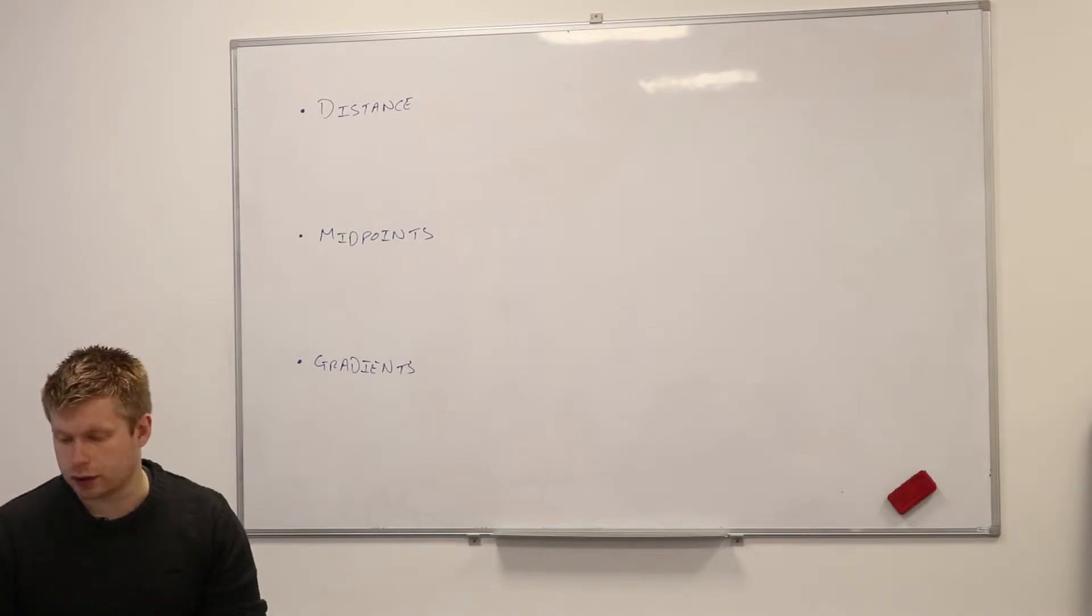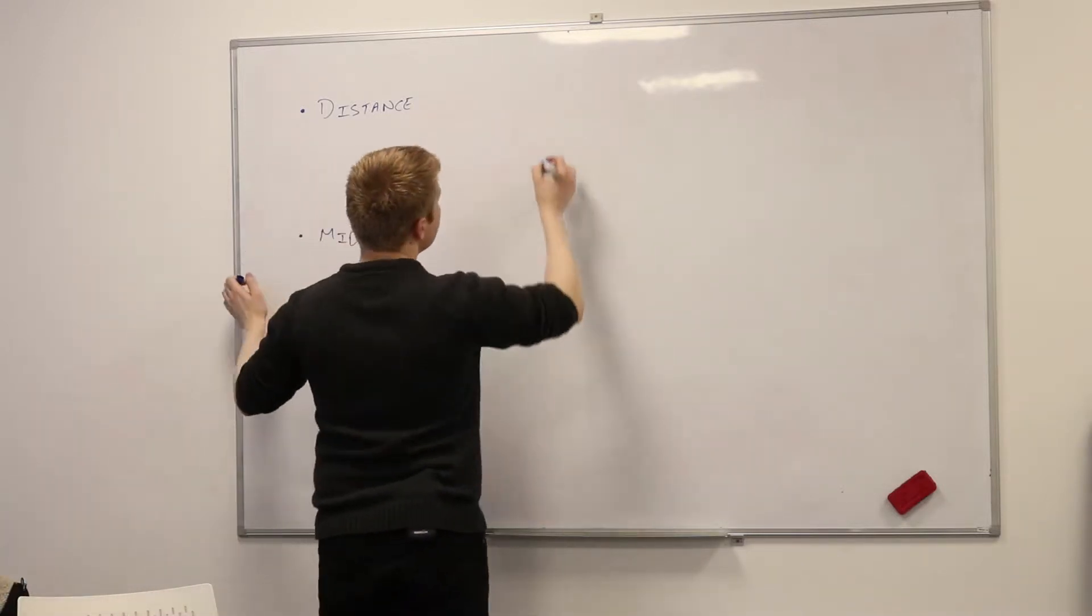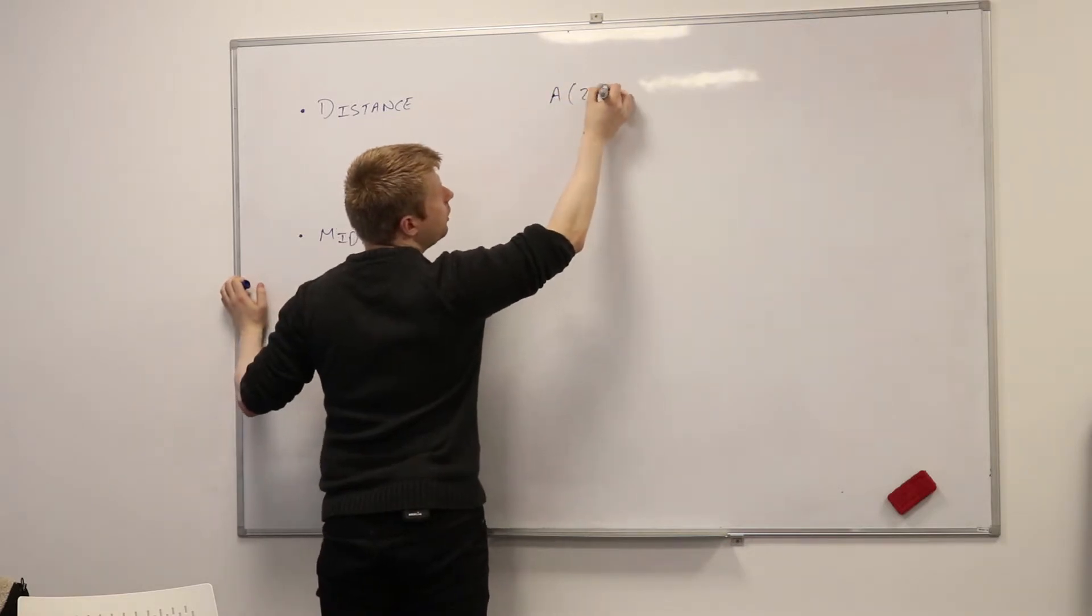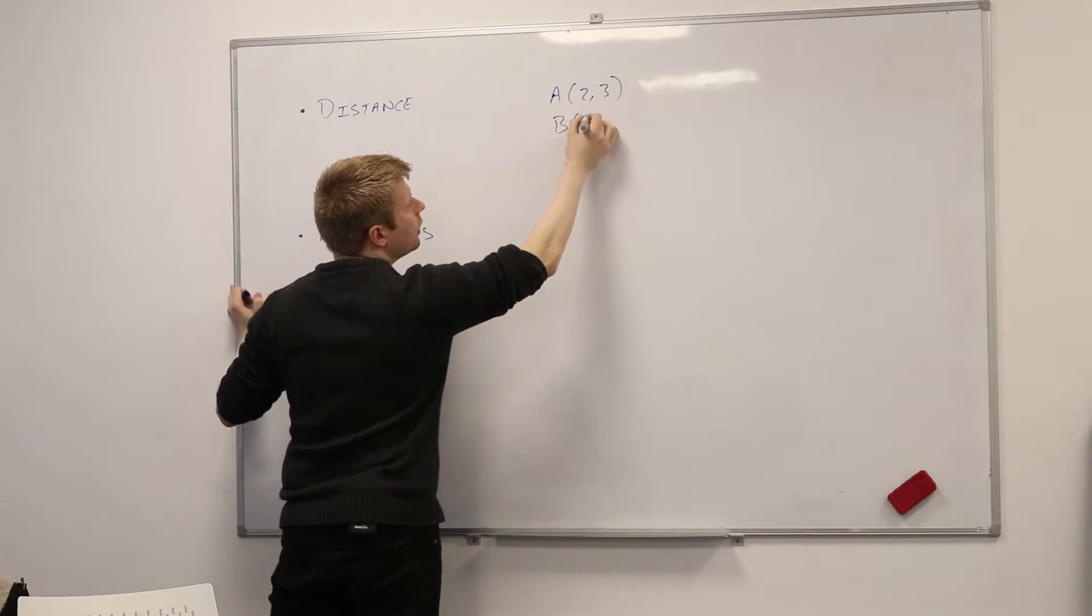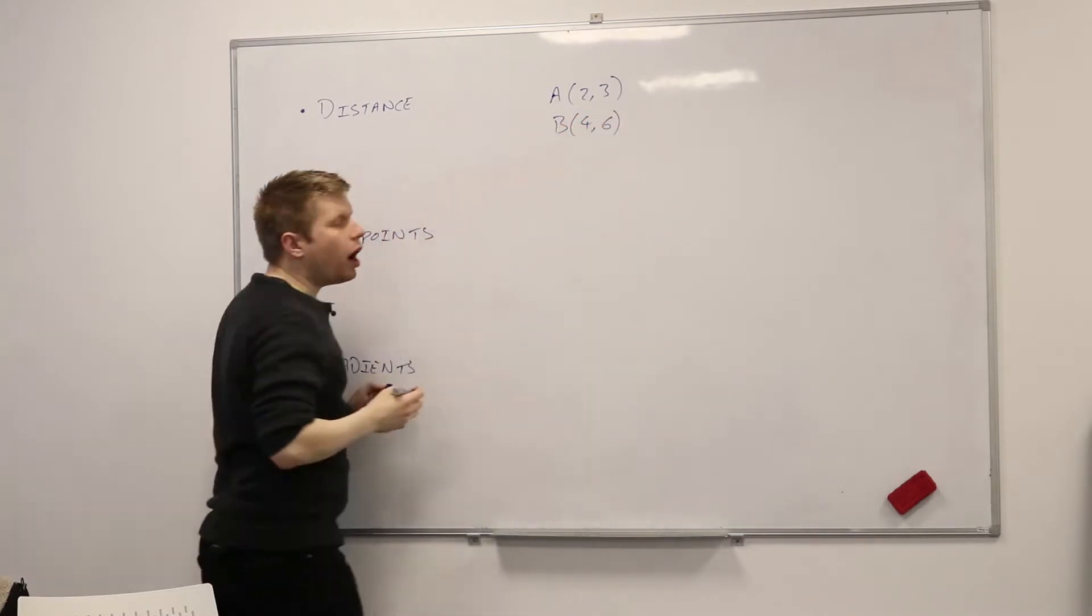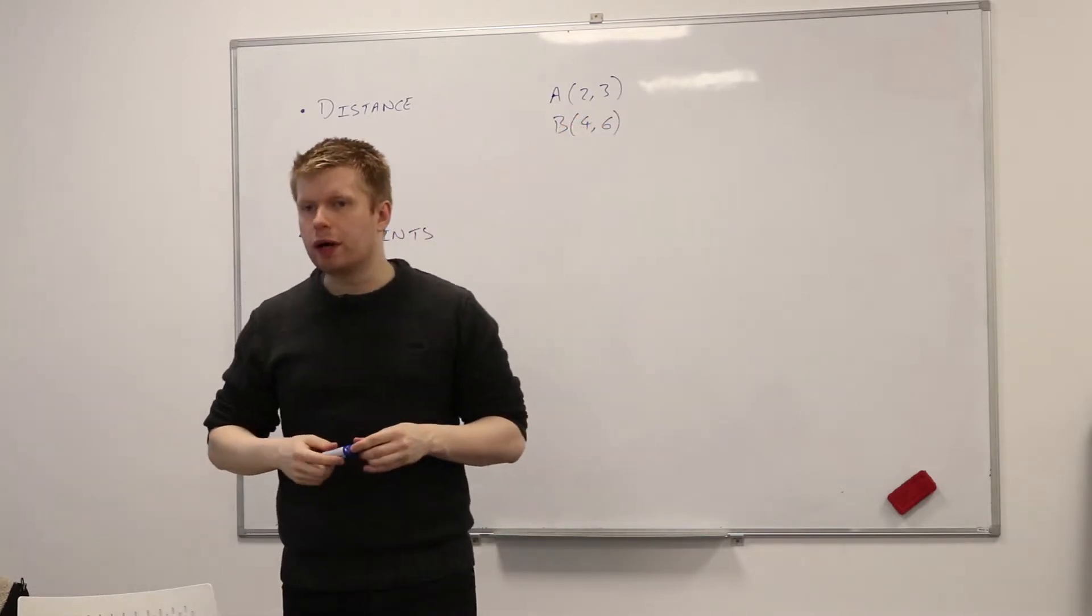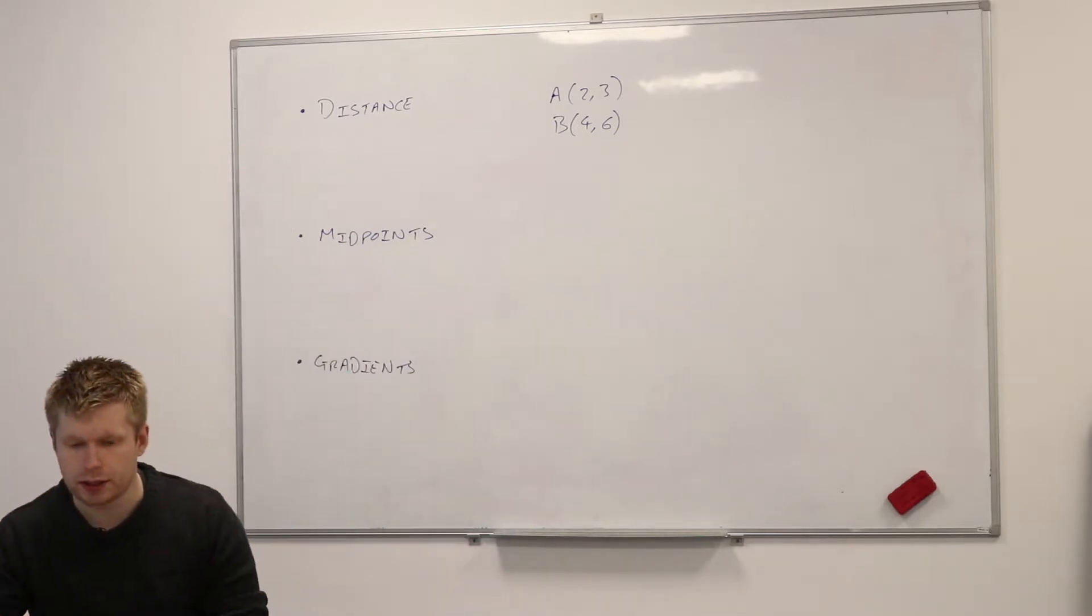Now, what if I was going to put another point on here? Let's say I was going to put this point here. So what would the point B be? Four, six. So I've got A is two, three. And that's how I'd write it. A is two, three. And B is four, six. Now, what I want to do is I want to work out what is the distance between those two points. So in other words, I want to find the length of this line here. So from A to B.